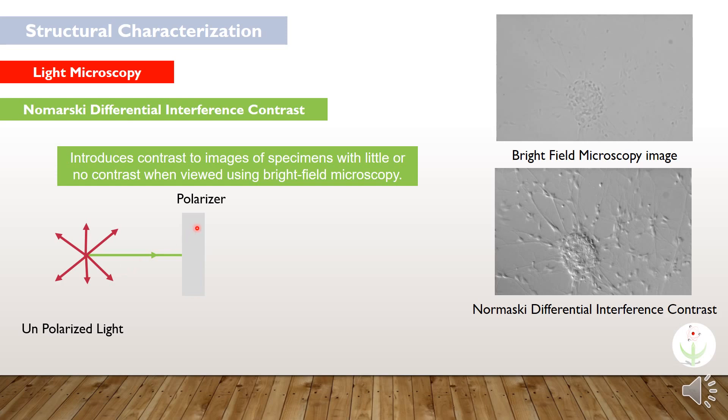In this technique, unpolarized light is first converted into polarized light. Then this polarized light is sent into Nomarski prism which splits them into two rays called ordinary ray and extraordinary ray. Use of this light creates such image contrast.